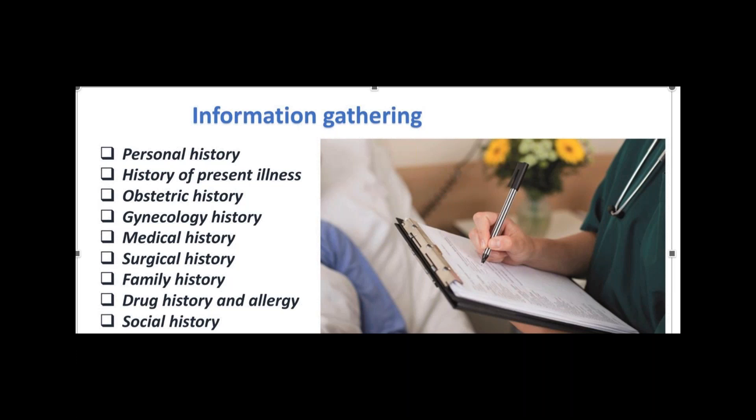For drug history and allergies: as mentioned, check if she is taking diuretic therapy. Allergies are very important because we will be giving medication at some point. Also, crucially, in urogyne we need to ask about a pacemaker if the main problem is urge incontinence or overactive bladder — because if we are going to provide treatment with posterior tibial nerve stimulation, the patient must not have a pacemaker fitted.